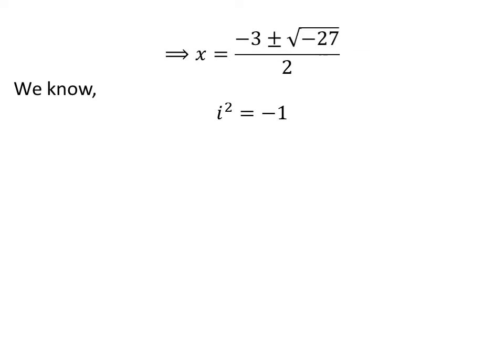We know the square of the imaginary unit i is -1. So, applying this property gives us x = (-3 ± √(27i²)) / 2.